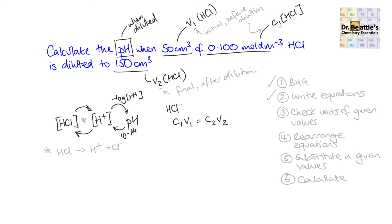Now we check the units of any given values — the ones underlined in step one. Moles per decimetre cubed is perfect for square bracket concentration work. Then we have centimetres cubed for volumes. Because C1V1 = C2V2 is a ratio of two volumes, as long as both volumes are in the same units it's absolutely fine — no need to convert to dm³, which would just create extra work.